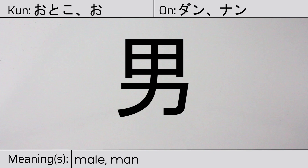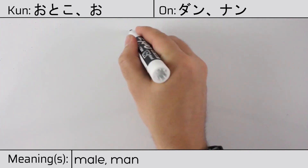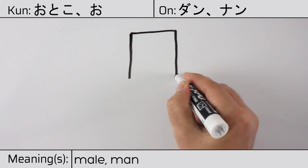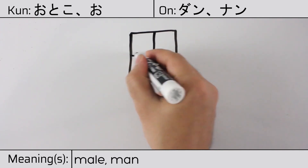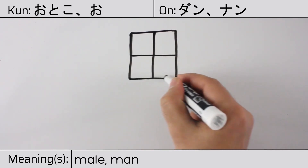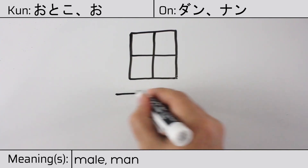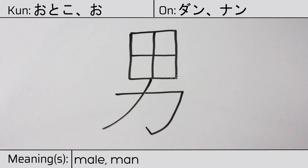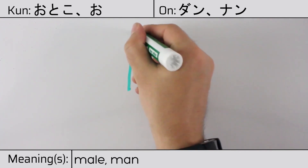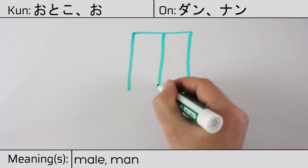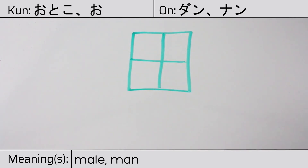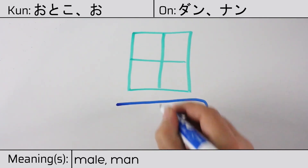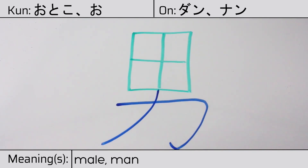Here is the stroke order. This character is made up of the following radicals or parts: field tane, or rice patty, followed by katakana ka, or the radical meaning strength or power.